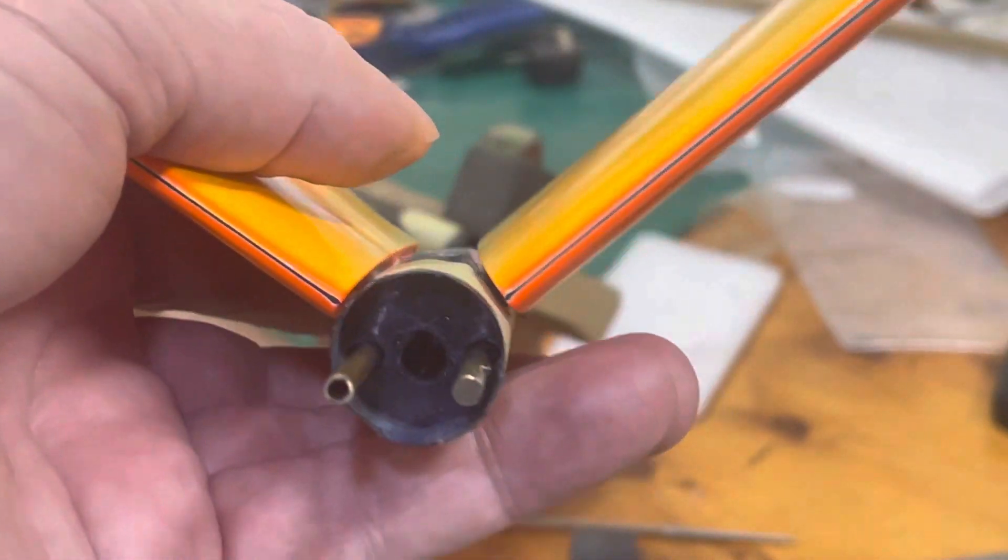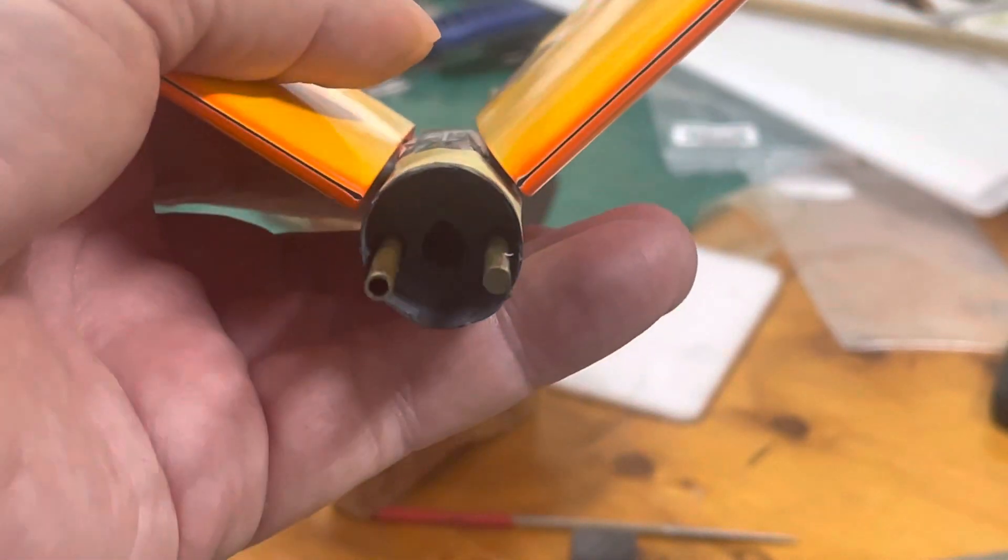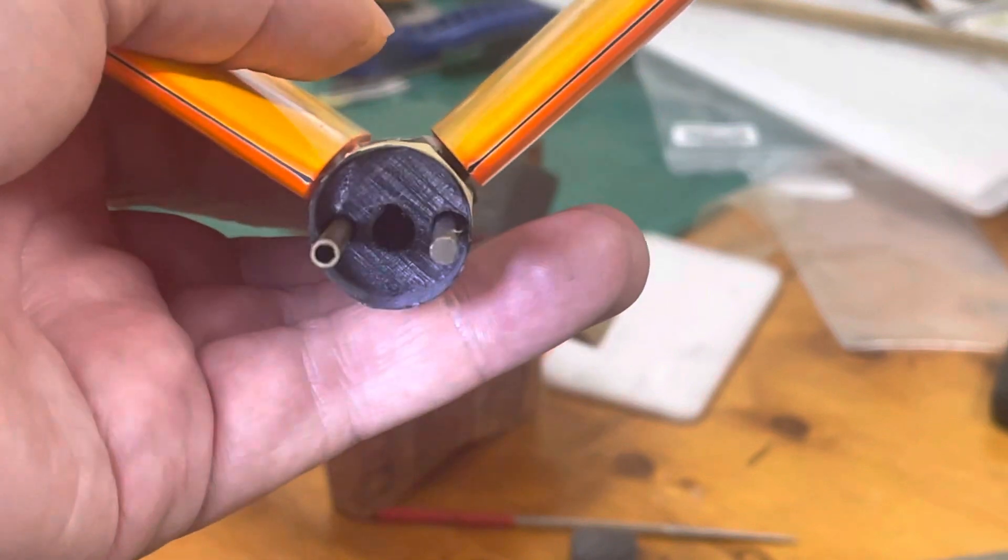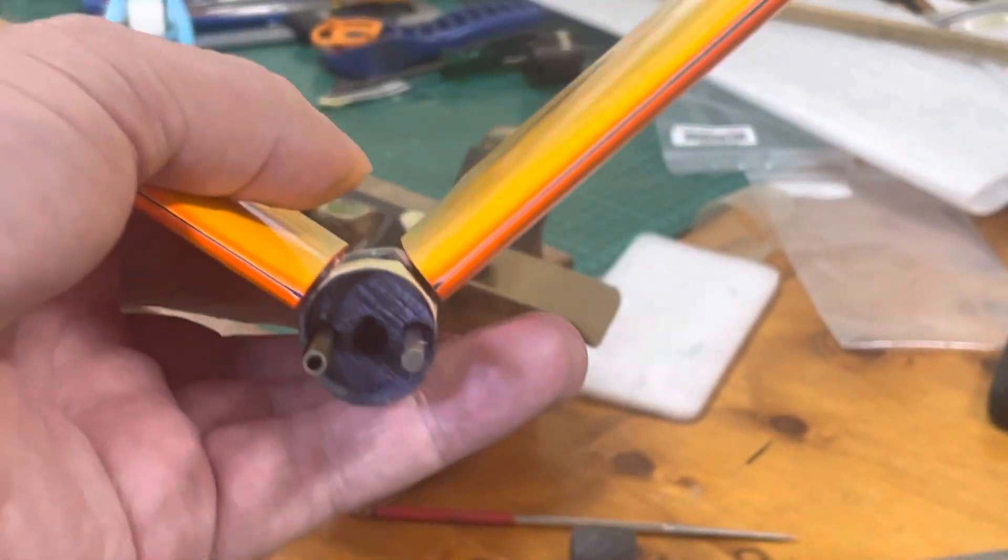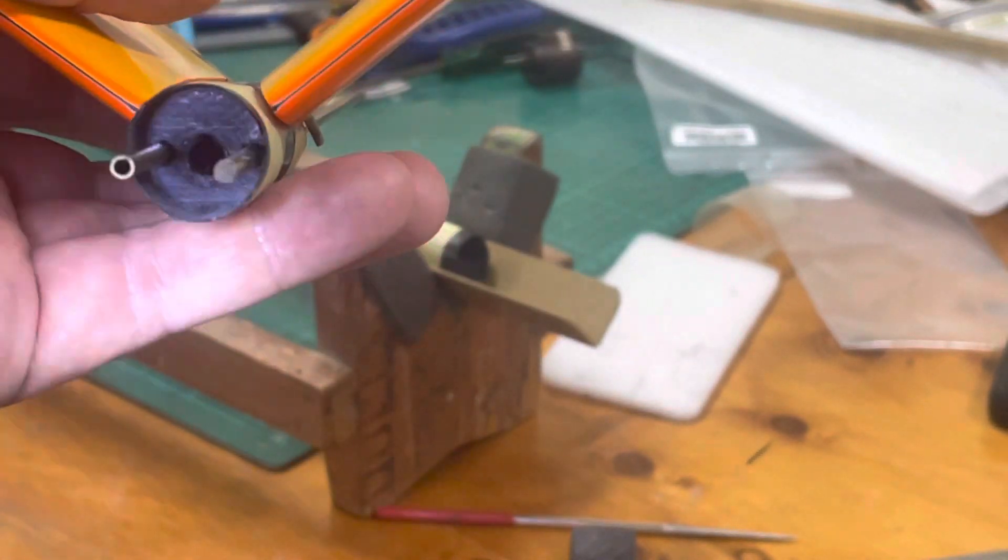Because I'm increasing the wall thickness there, and the push rods ran along the wall of the fuselage. So increasing the wall thickness moves them in a bit.